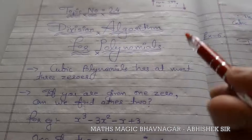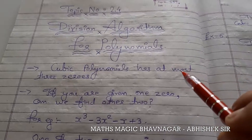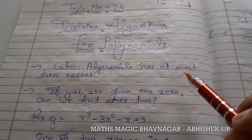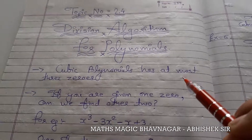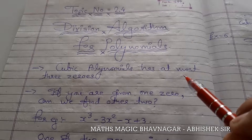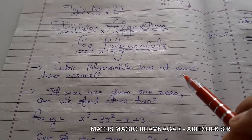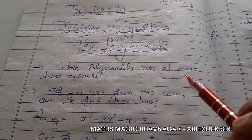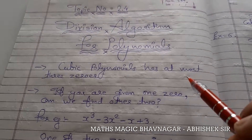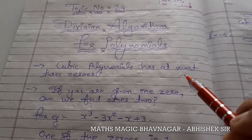Till now we have studied about the linear polynomial. In the linear polynomial, the variable will have the maximum exponent 1. In the quadratic polynomial, the maximum exponent for the variable will be 2. And in the cubic polynomial, the maximum exponent for the variable will be 3, and the zeros in the cubic polynomial will also be 3.